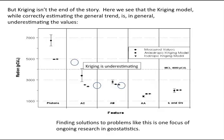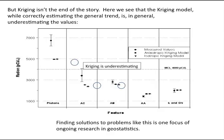Here are some current trends. Some of the newer types of research in this area are Bayesian and probabilistic networks, and another field known as Bayesian maximum entropy. These are all exciting new areas of research in geostatistics. Thank you.